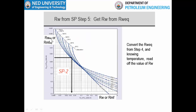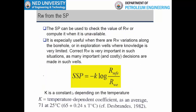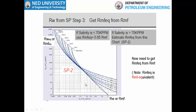Once you know RWe, you use the SP2 graph again to convert RWe to Rw. You enter the graph from the y-axis with RWe, find the temperature line, and from the point of intersection move vertically downward to read Rw from the x-axis. It is preferred to use this graphical method rather than the equation, since K is a constant that is temperature dependent.